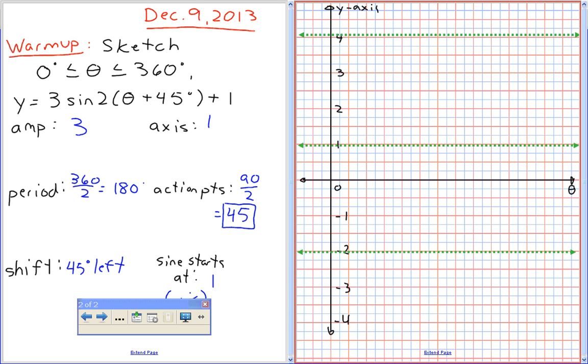So again, if you're sitting at home or in the back of this class and you say okay where do those come from? Okay, so remember, the axis is your middle, then you're just going to go up three to get your max, down three to get your minimum. Okay, Shelby, what comes next?